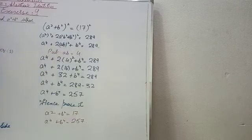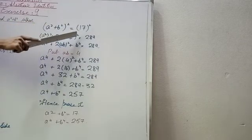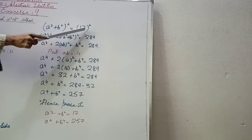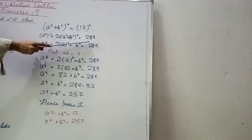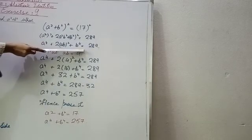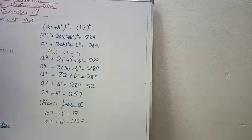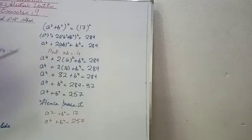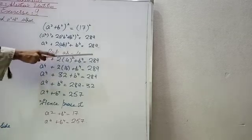We can write 2a²b² as 2(ab)². Since ab = 4, we substitute: a⁴ + 2×(4)² + b⁴ = 289. Now 4² = 16, so a⁴ + 2×16 + b⁴ = 289.